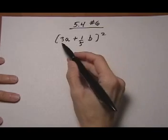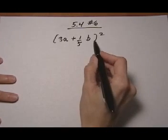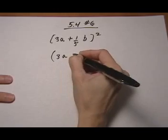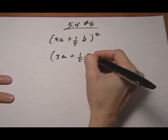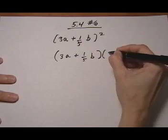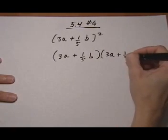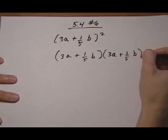So what we want to do is take the entire thing in parentheses, multiply it by itself two times, because that's what you do whenever you square something. We don't want to distribute the exponent in. We need to do 3a plus 1 fifth b times 3a plus 1 fifth b.